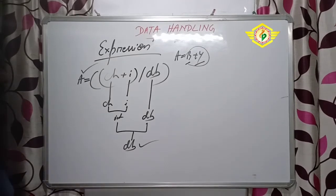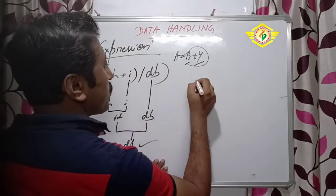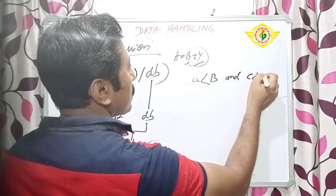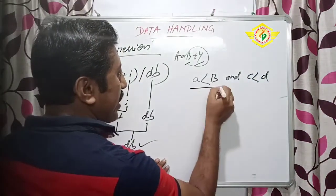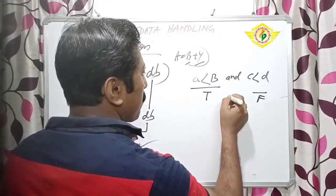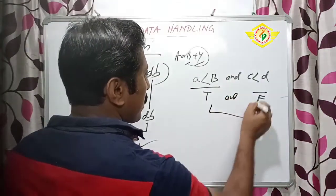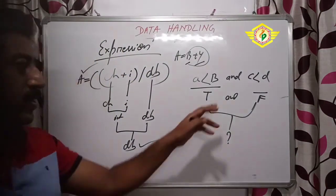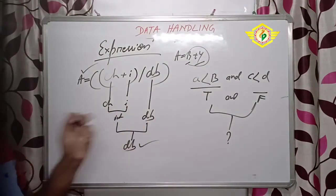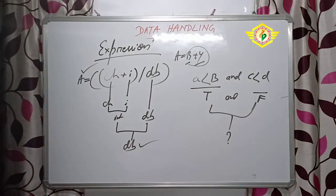Suppose we will take another example for the relational expression. I am writing A less than B and we are writing AND and C less than D. So in this case, whatever the value will come - it may be true or it may be false - then both can be compared by using AND, and the output will come accordingly. Here we are using the relational expressions and here we are using the arithmetic expression.